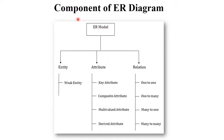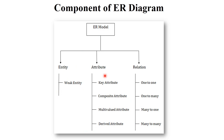The next point is components of ER diagram. ER model has basically three components: entity, attributes, and relation. Entity is divided into two parts: weak entity and strong entity. Attributes are divided into four parts: key attribute, composite attribute, multivalued attribute, and derived attribute. Relations are again divided into four parts: one-to-one, one-to-many, many-to-one, and many-to-many. We will discuss all these components in detail.